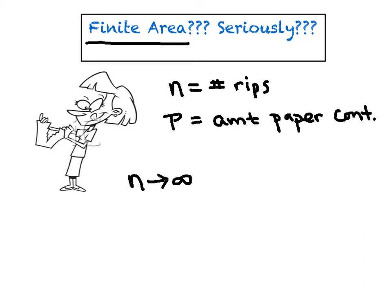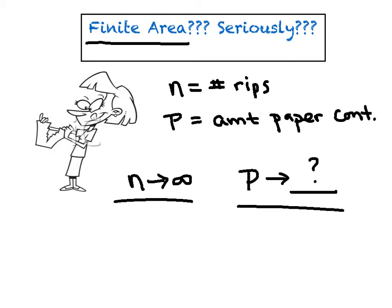As N approaches infinity — let's say we've sat there and ripped this piece of paper in half continuously, maybe a hundred times, then a thousand times, then 10,000 times — what is P approaching? I hope you'd agree that no matter how many times we've ripped the paper, it's impossible to have more than one sheet of paper in the container, because we started with one piece of paper. So P is approaching one complete sheet of paper — never more than that.